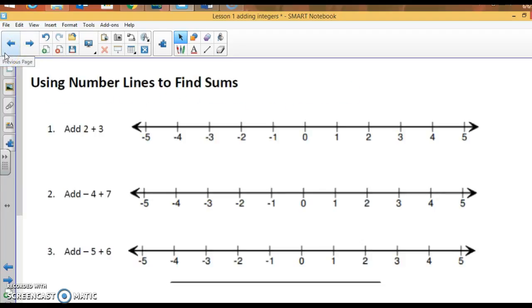First thing I want to do is talk about adding integers on a number line. Whenever you're adding on a number line, you always start at 0. You're going to move to the right for positive numbers and to the left for negative numbers. So if I ask you to add 2 plus 3 on a number line, you're going to start at 0. The first number is 2, so I'm going to go to the right to 2. And then plus 3, I'm already at 2, so I go right 3 more and I end up at 5. So the answer is 5.